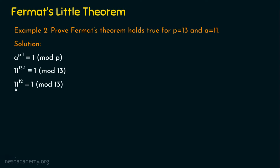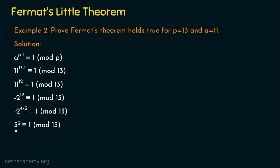We are going to use modular exponentiation to solve eleven to the power twelve mod thirteen. Since eleven is two short of thirteen, we can use minus two in place of eleven. So minus two to the power twelve is congruent to one mod thirteen. Breaking twelve into four times three, we get minus two to the power four, raised to the power three. Minus two to the power four is sixteen; sixteen divided by thirteen leaves remainder three. So we get three to the power three, which is twenty-seven. Twenty-seven divided by thirteen gives thirteen times two equals twenty-six, with remainder one.